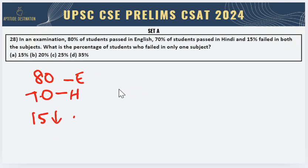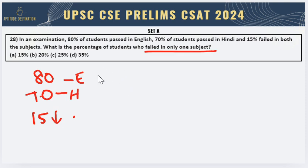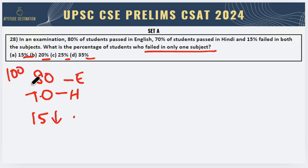Now what we can do is, since they are asking for the percentage of students who failed only in one subject, we are going to consider the failed numbers. Basically, 80% of students have passed. I don't need to put percentage because everything is in percentage, so you can consider the total students as 100 and just work with this value.